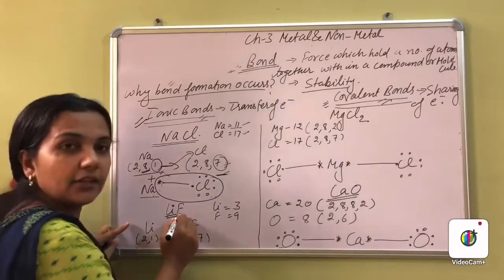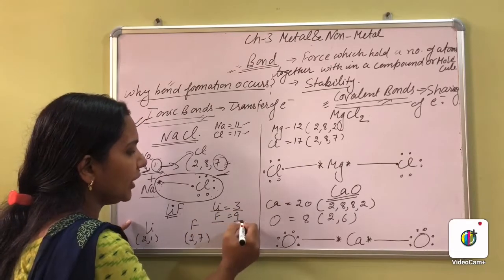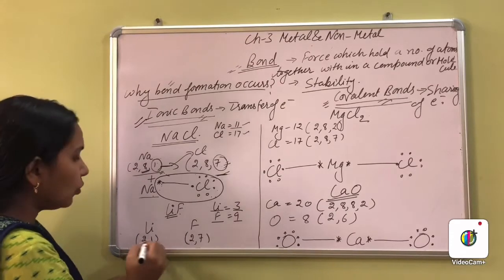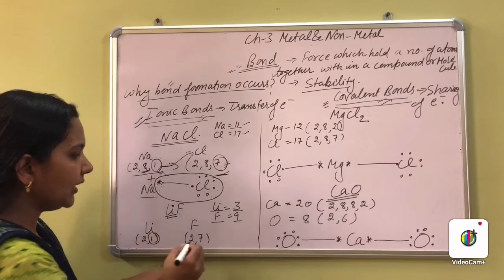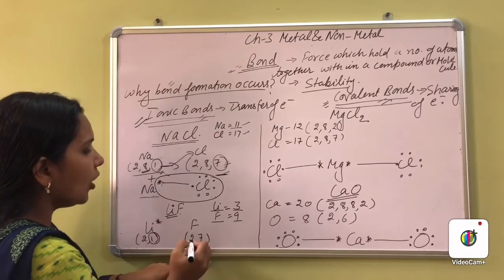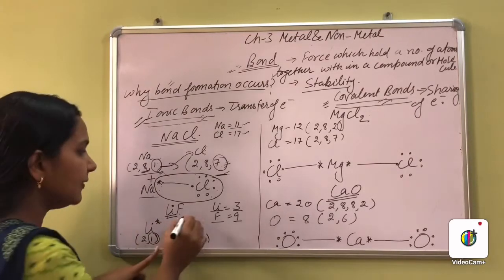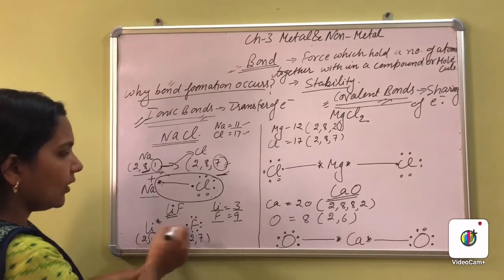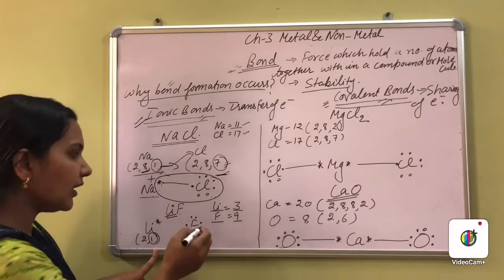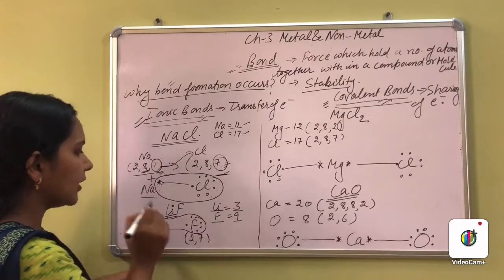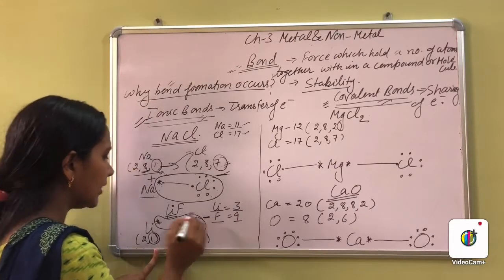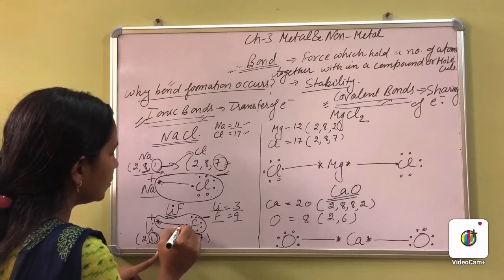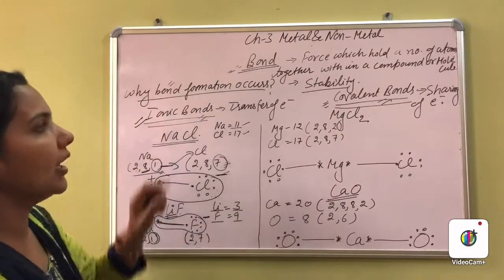Similarly, in case of lithium fluoride — atomic number of lithium is 3, and fluorine is 9. Electronic configuration of lithium is 2, 1 — and fluorine is 2, 7. Lithium has 1 in the outermost shell, fluorine has 7. Fluorine will take lithium's one electron, fluorine will become single negative, and lithium will become single positive. This type of bond formation is said to be the ionic bond.